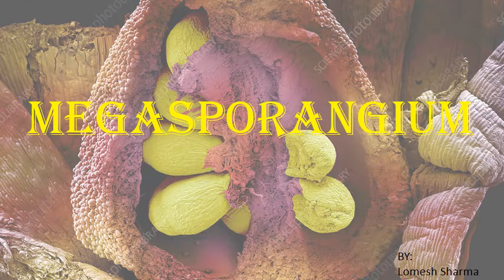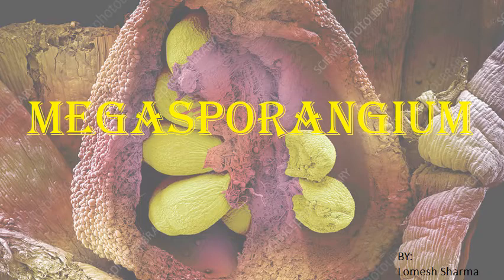Hello everyone, welcome back. Today I am here with another topic of plant embryology, that is megasporangium. In the last lecture I discussed microsporogenesis — how pollen grains are formed and how the pollen wall develops. Today I will discuss the female reproductive structure, that is the carpel and its parts. Basically I will focus on megasporangium, that is the ovule — its general structure and types of ovule.